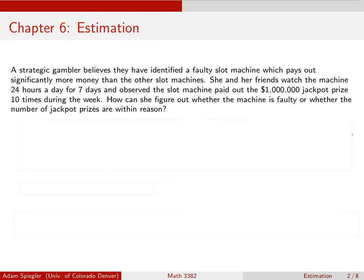They observe that this machine paid out the $1,000,000 jackpot 10 times during the week. So how can they figure out whether the machine is faulty or whether the number of jackpot prizes is within reason?